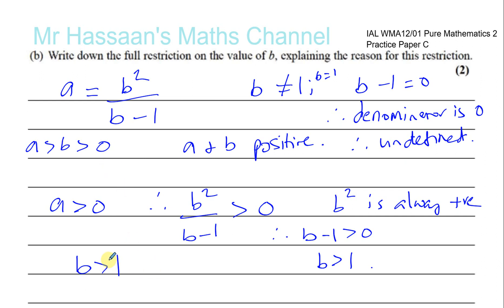Okay. So, A is greater than B is greater than 0. So, B must be greater than 1. Okay. B has to be greater than 1. So, not only can it not be equal to 1, it has to be greater than 1. Okay. It has to be greater than 1.